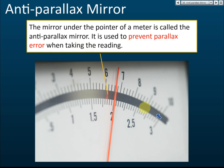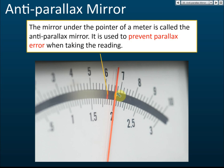The function of this mirror is to prevent parallax error when taking readings. If your eye is directly on top of the pointer, then the pointer will cover its own reflection in the mirror and you cannot see the image. If you cannot see the image, there is no parallax error, so what you read is accurate.